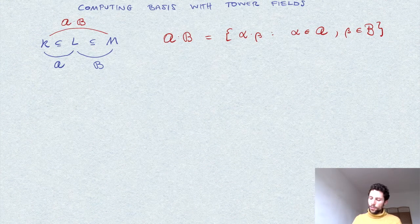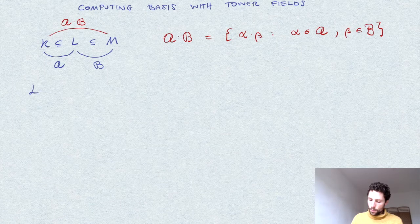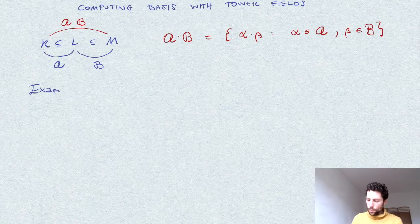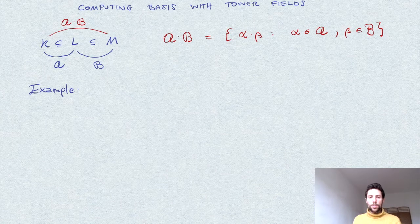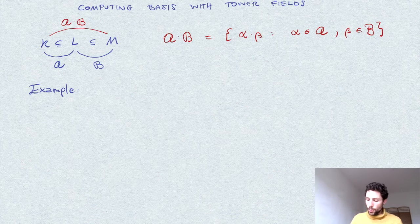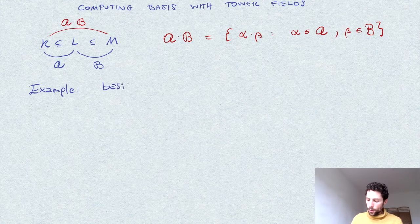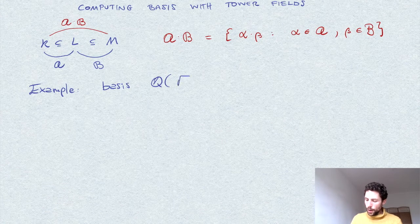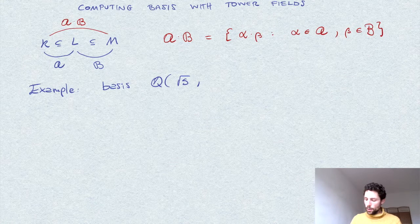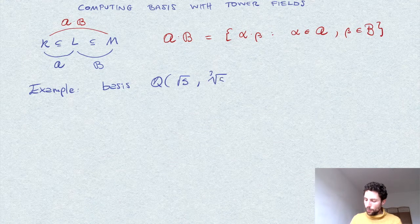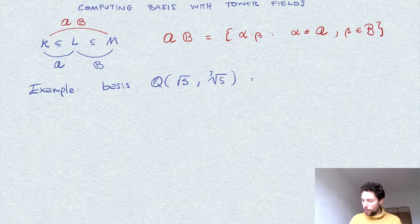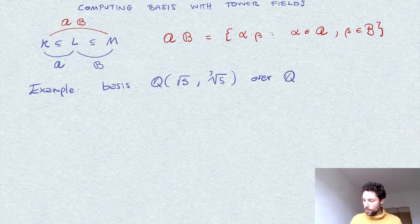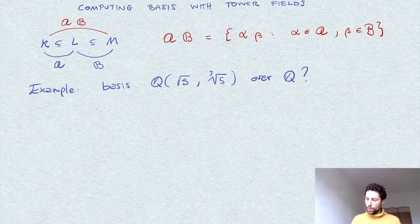To make things concrete, let's give an example of application of this result. Suppose we want to compute the basis of the extension of Q given by square root of 5 and a cubic root of 5 over Q.